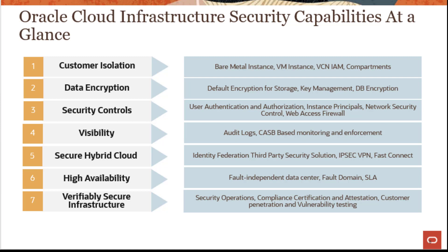For network security, we have ACLs and web access firewalls. For visibility, audit logs and cache-based monitoring. For secure hybrid cloud, IPsec VPN, FastConnect, as well as third-party security solutions. For high availability, fault-independent data centers and fault domains, which basically ensure that workloads are distributed across different physical servers within a data center, so not all workloads reside on the same physical server in case the server runs into any issues. For verifiably secure infrastructure, security operations and compliance certifications, and we also provide customer penetration and vulnerability testing to ensure all workloads the customer has deployed are secure.